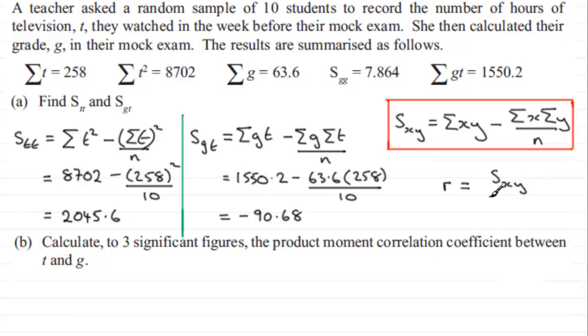It would say it's sxy over the square root of sxx multiplied by the square root of syy, or you could have it all under one square root, so that's syy. Makes no difference. So again, a formula that you should be familiar with, so we just box that.